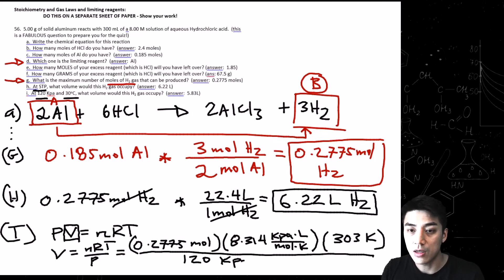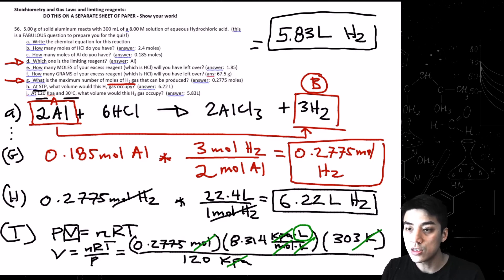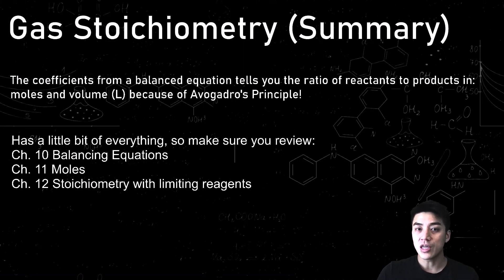Let's see how all the units cancel out. And they all cancel except for liters. That's great. That's what we wanted to find. We wanted to find volume, so what should be left over is liters. And I'll go ahead and write it up here since we're running out of room. The answer should be 5.83 liters of H2.